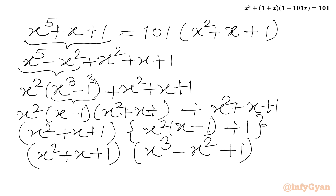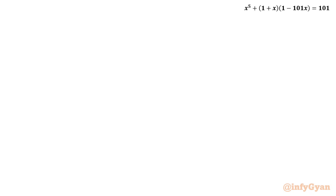In the other bracket I can write x squared times x minus 1 plus 1. This gives us our LHS with x square plus x plus 1 factored out.